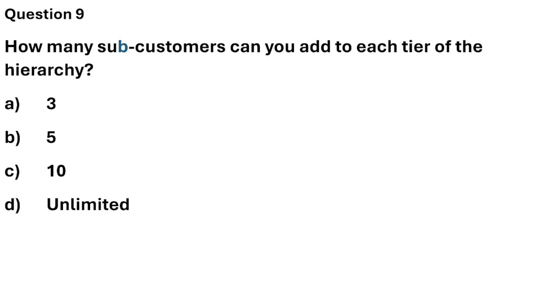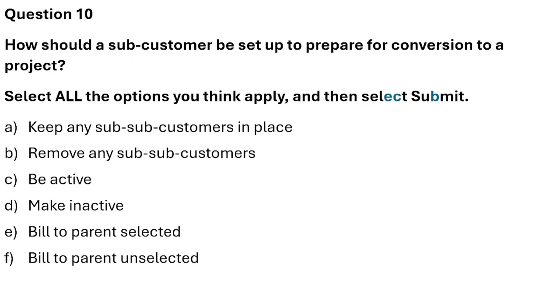Question 9: How many sub-customers can you add to each tier of the hierarchy? There are four options and the correct answer is Option B: five tiers.